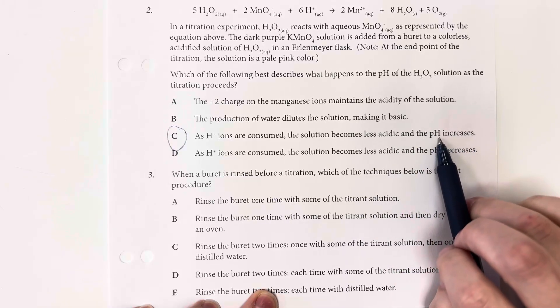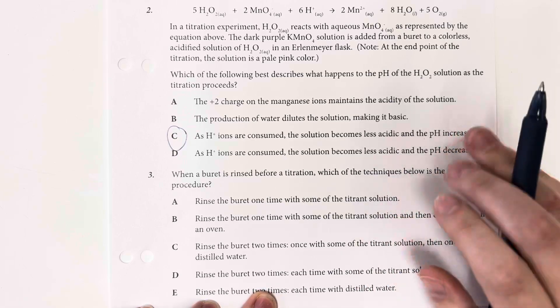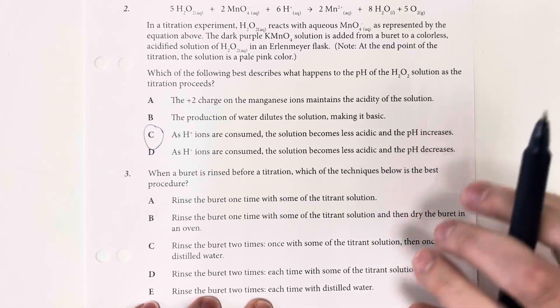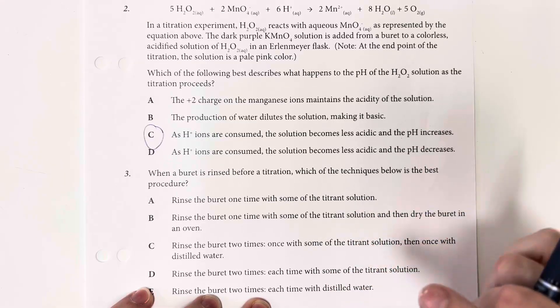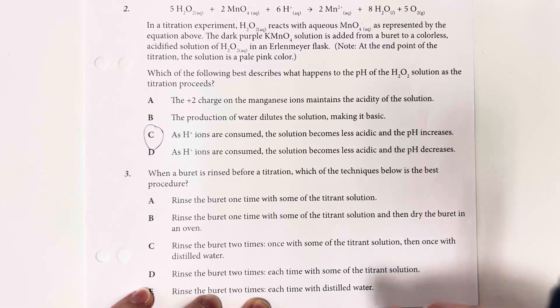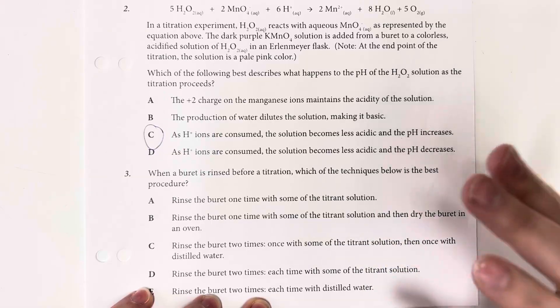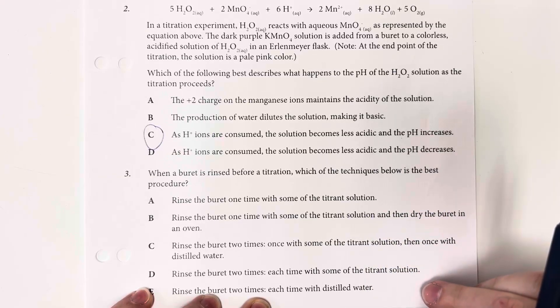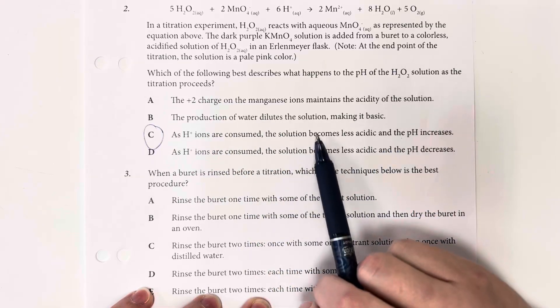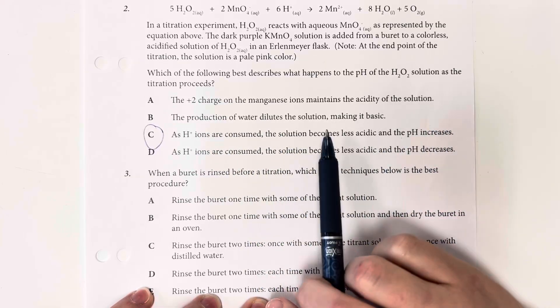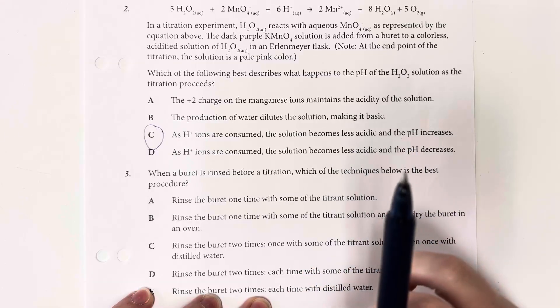So it's often a mistake for students to think that acids are a high pH, however, this is not the case, it is in fact the inverse. So if pHs are below 7, that means it is acidic, if pH is above 7, it is basic. And so as I consume hydrogen ions, I am becoming less acidic and more basic, and therefore my pH increases.